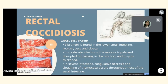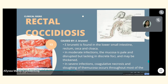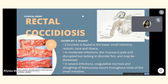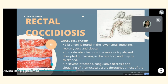Rectal coccidiosis is caused by E. brunetti, found in the lower small intestine, rectum, ceca, and cloaca. In moderate infections, the mucosa is pale and disrupted but lacking discreet foci and may be thickened. In severe infections, coagulative necrosis and sloughing of the mucosa occurs throughout most of the small intestine.